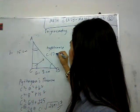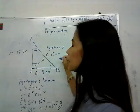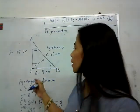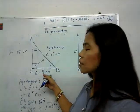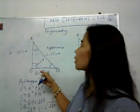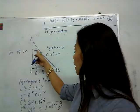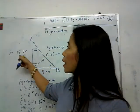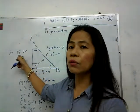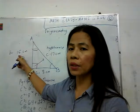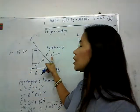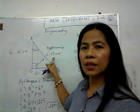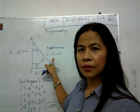Our answer is 17 cm, which makes sense as our other two sides are shorter. Side A is 8 cm, side B is 15 cm, and side C, the hypotenuse, is 17 cm.